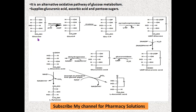Coming to the reactions of the uronic acid pathway — the first step is similar to glycolysis. Glucose in the presence of hexokinase is converted to glucose-6-phosphate. A hydrogen is removed and a phosphate is attached, with the phosphate coming from ATP and going to ADP. So in the conversion of glucose to glucose-6-phosphate, ATP is converted to ADP.